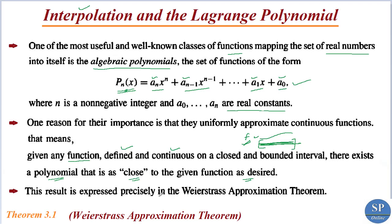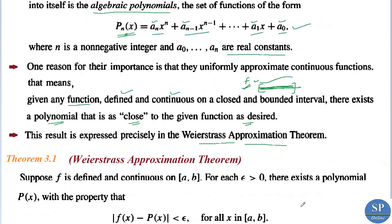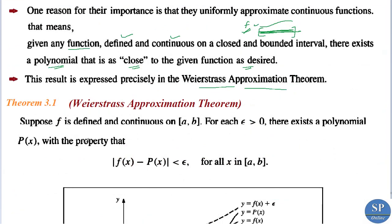This result can be seen in the Weierstrass approximation theorem. The Weierstrass approximation theorem states: suppose f is defined and continuous on a closed interval [a, b]; for each ε > 0, there exists a polynomial p(x) with the property that |f(x) − p(x)| < ε for all x in [a, b].